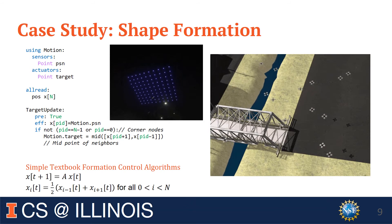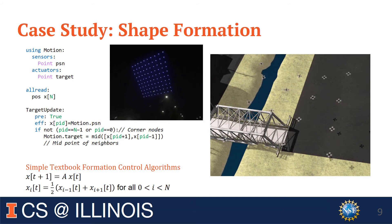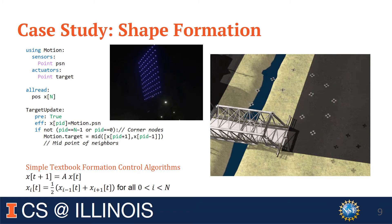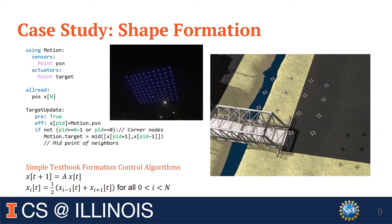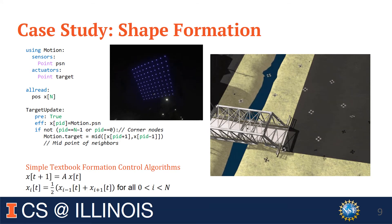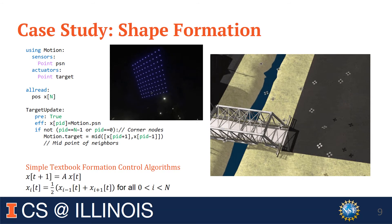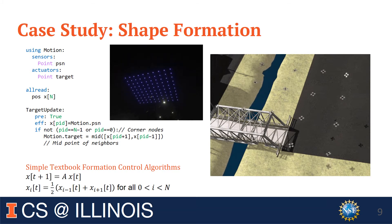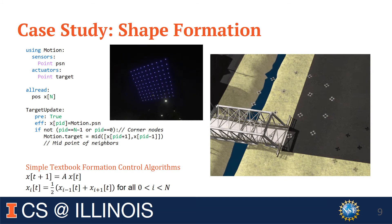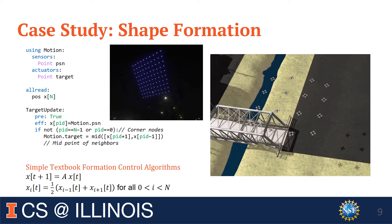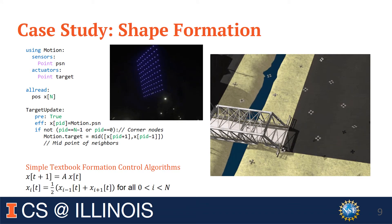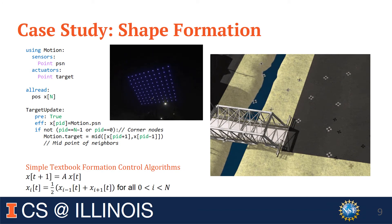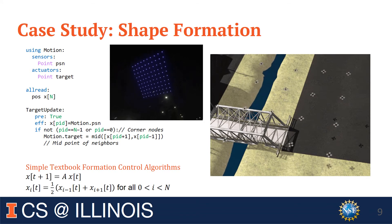Besides the delivery application, we are also able to create a formation flight application using CORD. The textbook algorithm is really succinct because it assumes that each robot has access to its neighbors' positions. In CORD, robots can share their positions using shared memory, and the CORD code is also very succinct and close to the textbook algorithm. On the right, we can see the algorithm being simulated in our simulation environment.